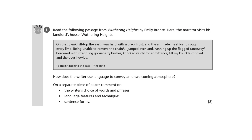This exercise is based on question two of the English Language Paper One, but it will still be useful practice for literary analysis in the English Literature exam. We're looking at a passage in Wuthering Heights and we're asked: how does the writer use language to convey an unwelcoming atmosphere?